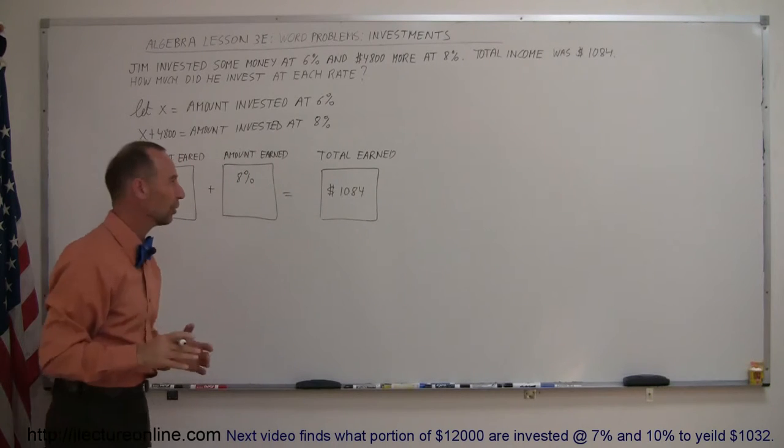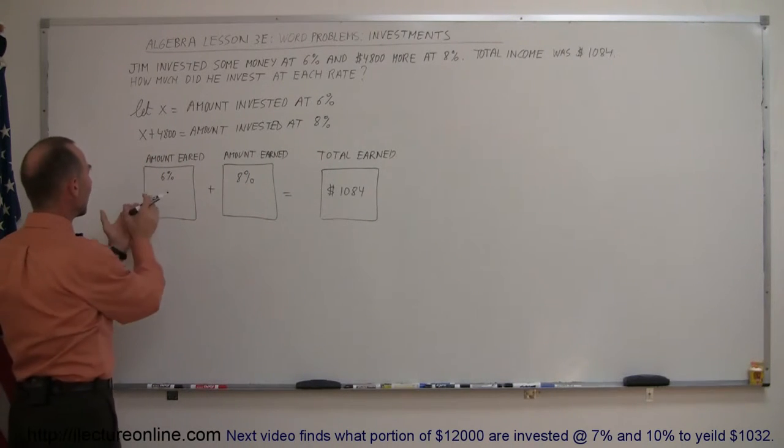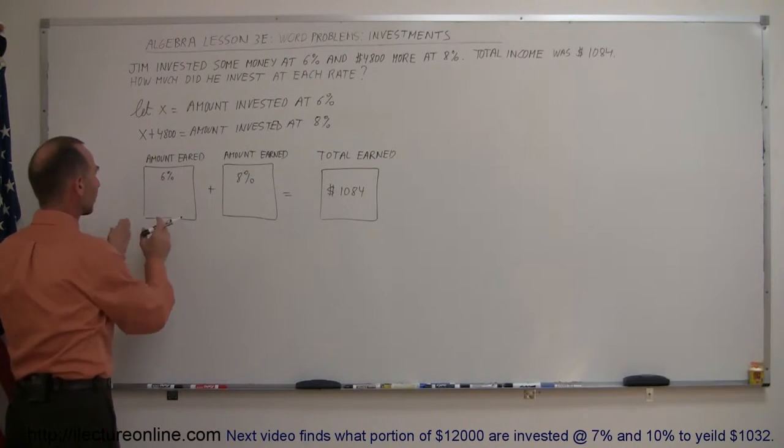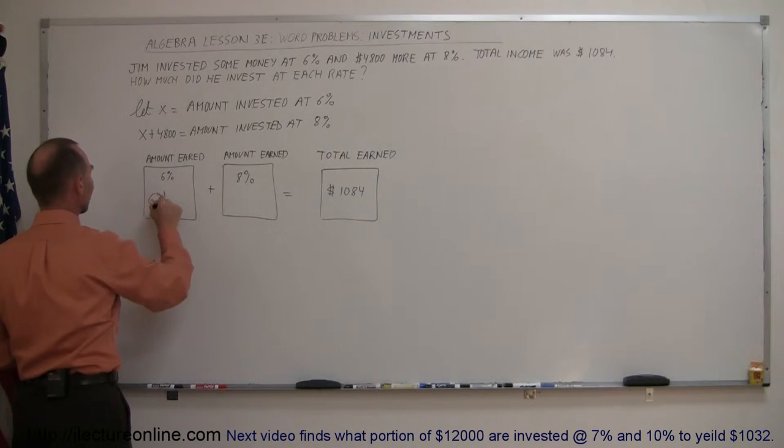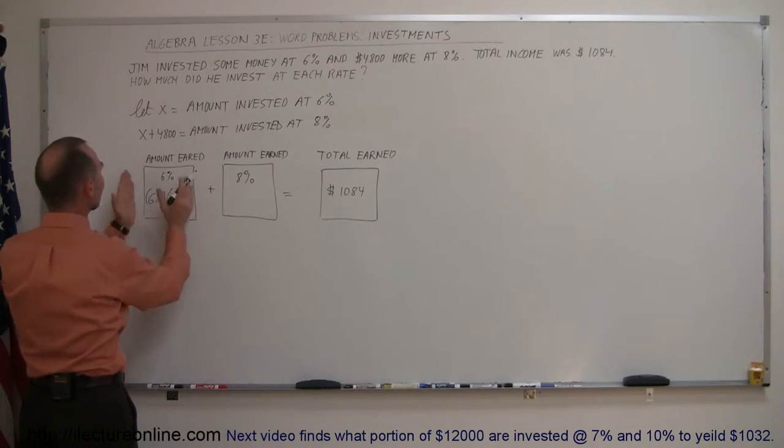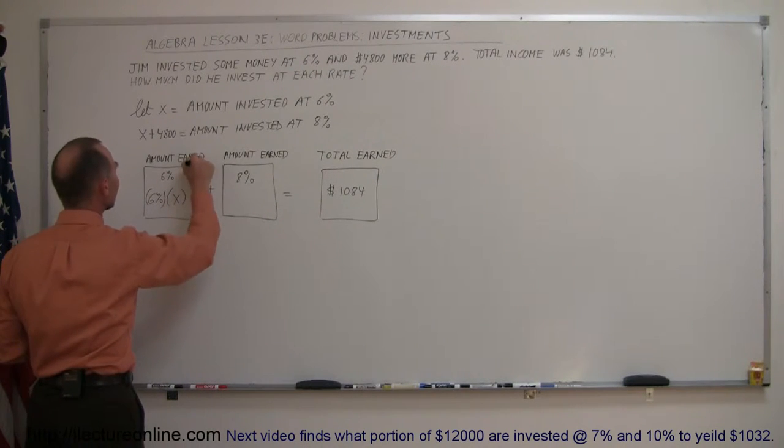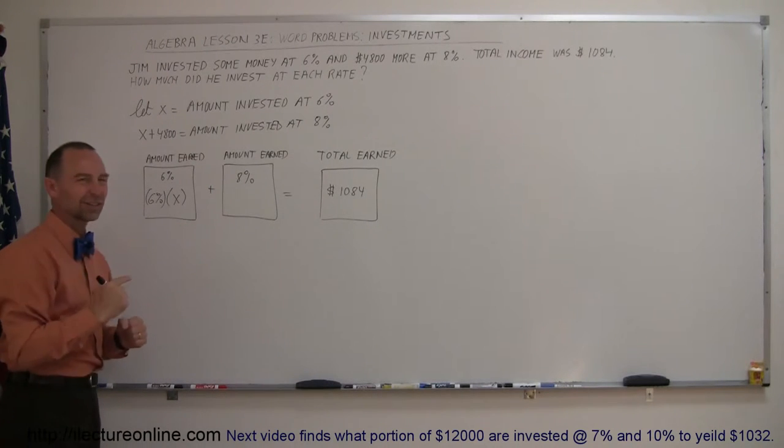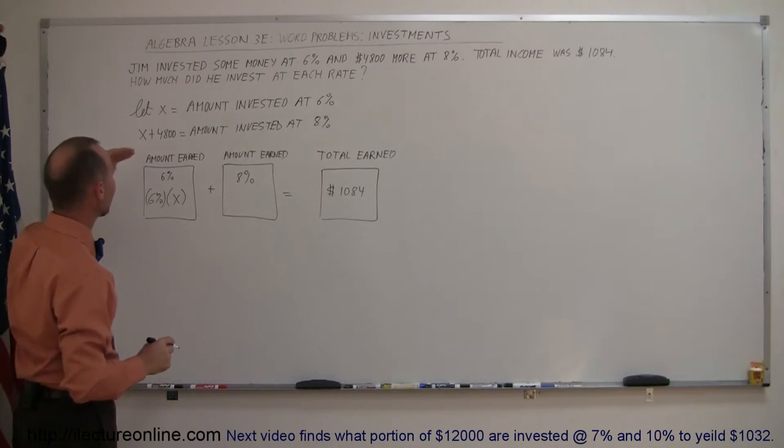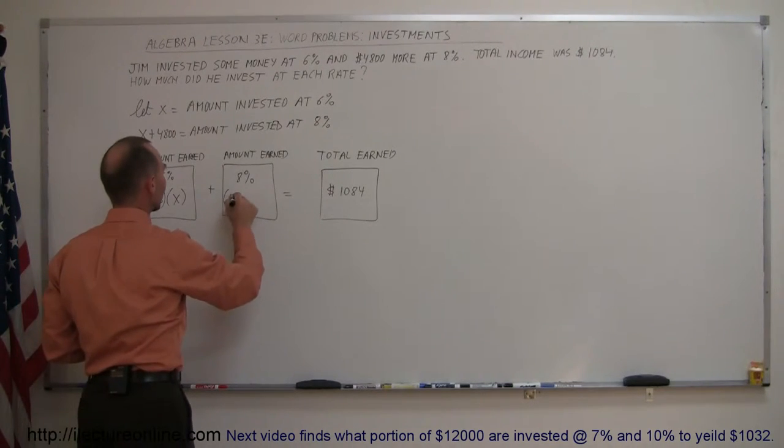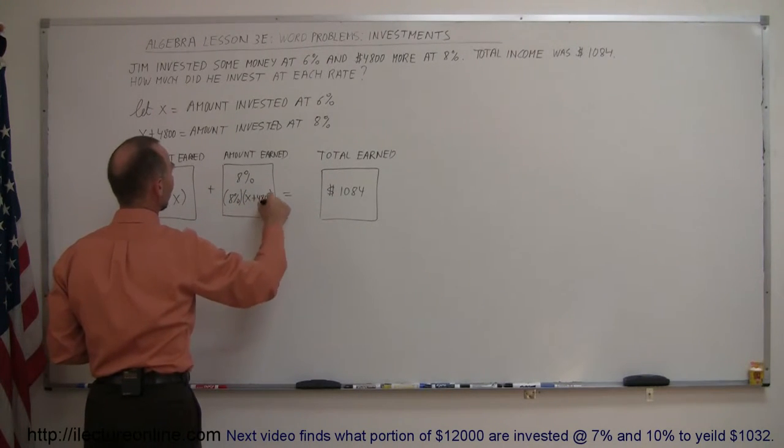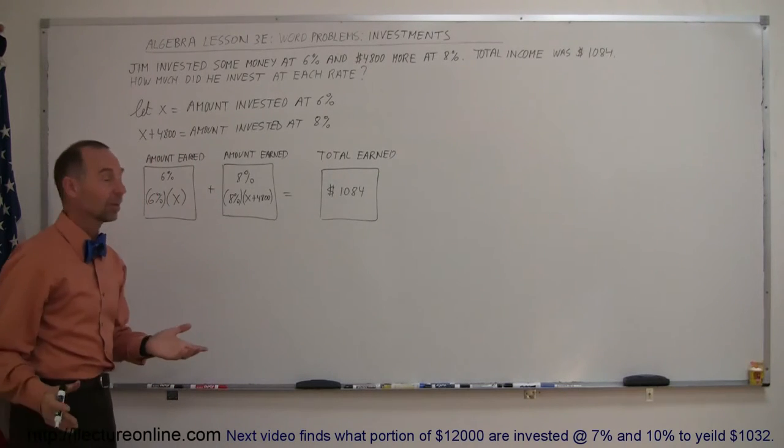So how do we find the amount earned in each case? If we take the rate of return and we multiply times the amount that was invested, that gives us a total amount earned. So we can say that 6%, that's the rate of return, multiply times the amount that was invested x, that'll give us the amount earned. Here we have the 8% investment. Again we multiply the rate of return which is 8% times the amount invested which is x plus $4,800, and that should add up to the total amount of money earned. So now we have our equation.